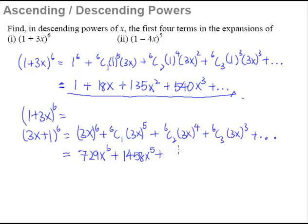As we proceed on, 3^4 is 81 and 6C2 is 15. So 15 multiplied by 81, that will give us 1215x^4.